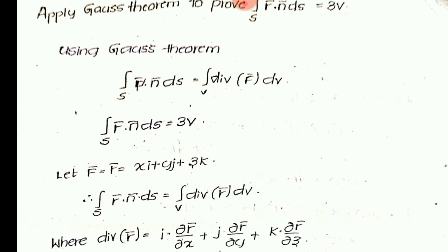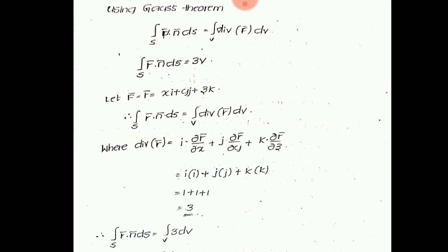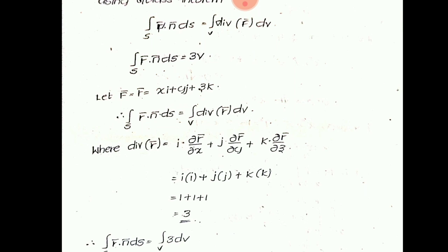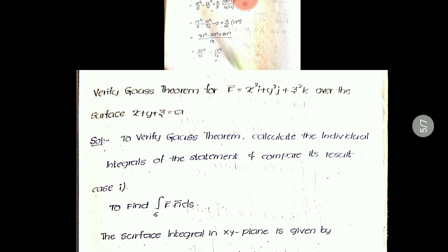To use the Gauss divergence theorem, find the divergence of R̄. The divergence of R̄ equals î·∂R̄/∂x + ĵ·∂R̄/∂y + k̂·∂R̄/∂z. Substituting the differentiated values gives the answer 3. Therefore, integral over S of R̄·N̄ dS = integral over V of divergence of R̄ dV = 3·∫dV = 3V. That is the final answer.